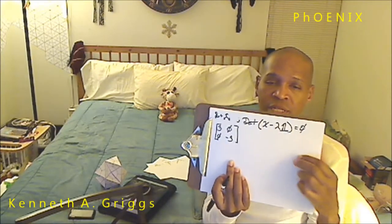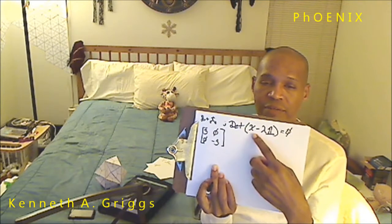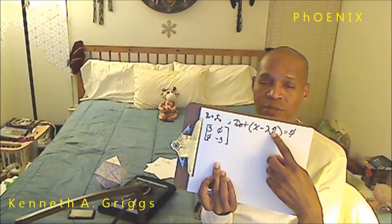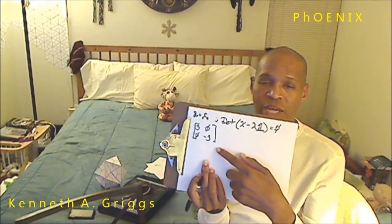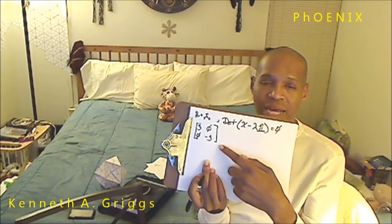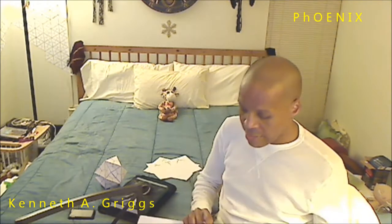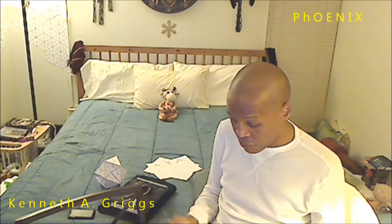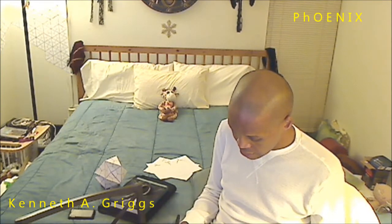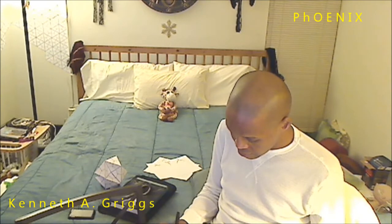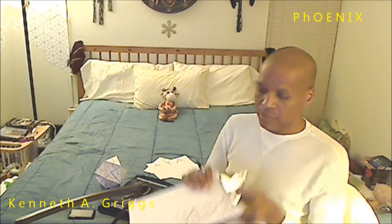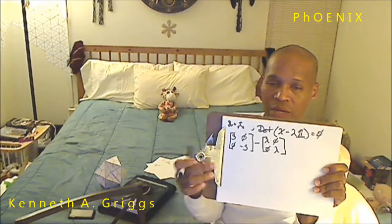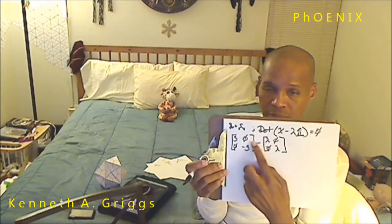Our definition: we have the determinant of the matrix, the eigenvalue, and so on. So our matrix is chi, and the determinant — the first thing we have to do is subtract from it lambda times the identity. So the matrix that we're subtracting is this right here.